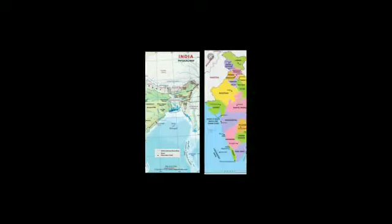This is a physical map of India. It tells us about the international boundaries, rivers, and mountain peaks. Next is the Indian political map, which tells us about international boundaries, states, union territories, and capitals.